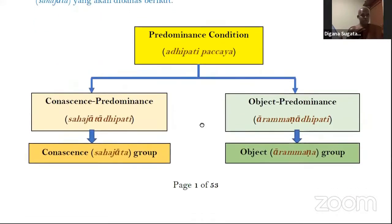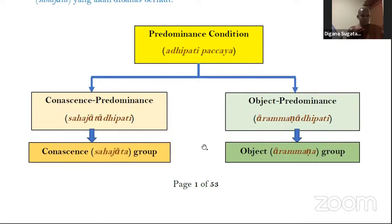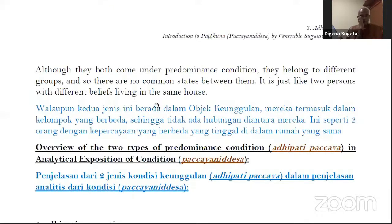You can see in the chart: Adipati Pachaya has two meanings — Sahajata Adipati and Arammana Adipati. Sahajata is in the Sahajata group; Arammana Adipati is in the Arammana group. Although they both come under predominance conditions, they belong to different groups, and so there are no common states between them. It is just like two persons with different beliefs living in the same house — like a husband and wife who are different in mind and understanding, yet living together in one house. Same way, Adipati Pachaya is one, but it has two meanings.